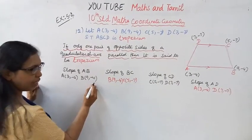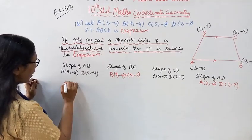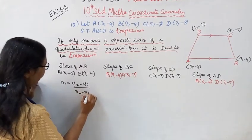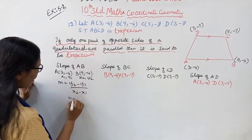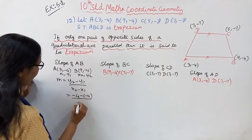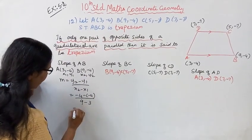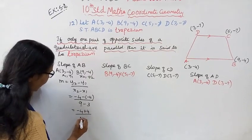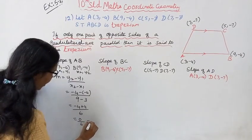Two points are given: A(3, -4) and B(9, -4). Using the formula y2 minus y1 divided by x2 minus x1: x1=3, y1=-4, x2=9, y2=-4. So slope of AB = (-4 minus (-4)) divided by (9 minus 3) = (-4 + 4) / 6 = 0 / 6 = 0.